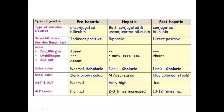Regarding urine findings: in prehepatic jaundice, conjugated bilirubin is absent in urine. In posthepatic jaundice, conjugated bilirubin will be raised; urobilinogen initially will be raised, but in case of obstruction there will be a decrease in urobilinogen, and bile salts are present in urine. Conjugated bilirubin will be raised more, there will be no urobilinogen, and bile salts will be increased. The urine color in prehepatic jaundice will be normal, while in hepatic and posthepatic jaundice the urine appearance will be dark.